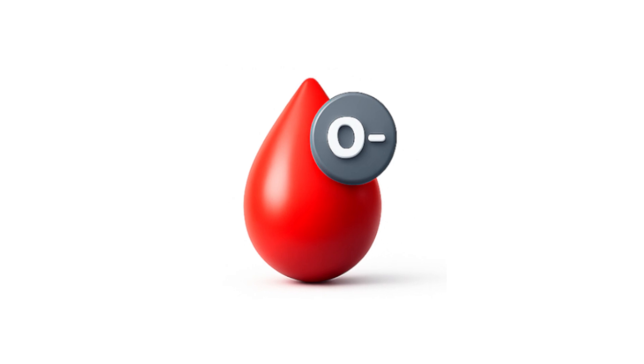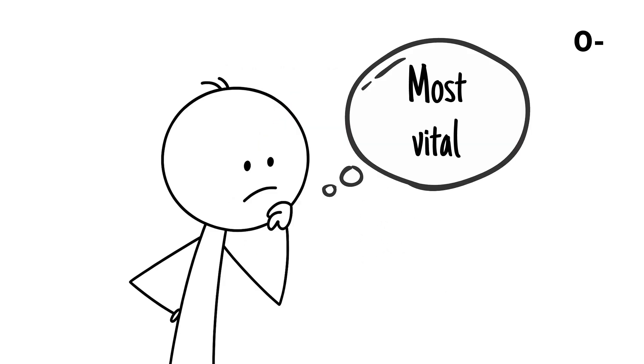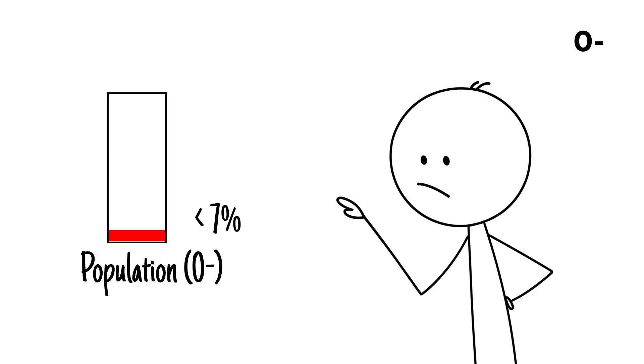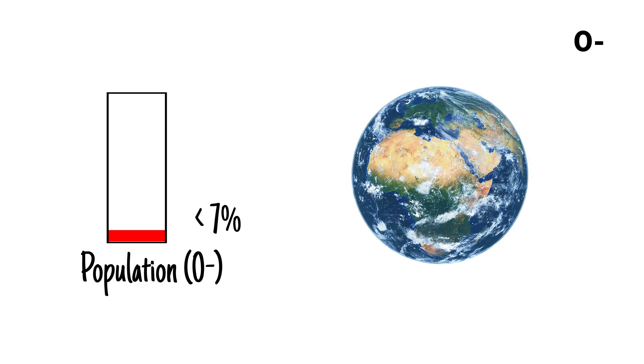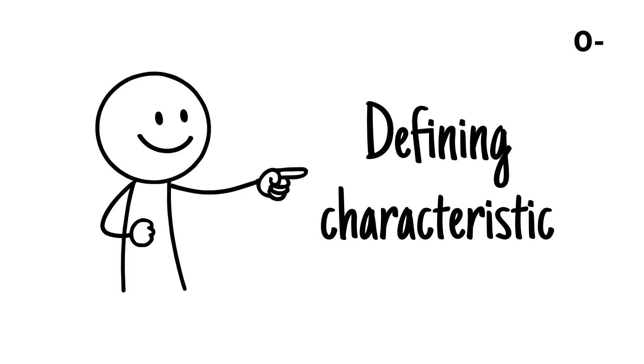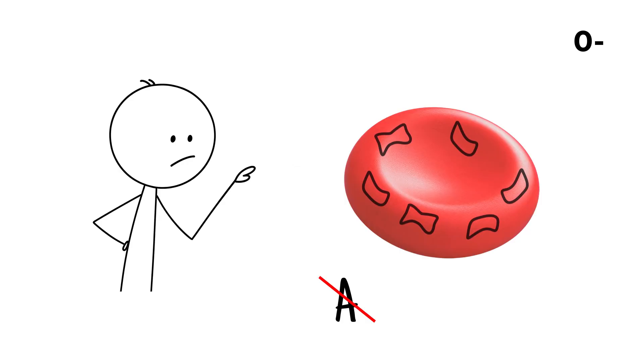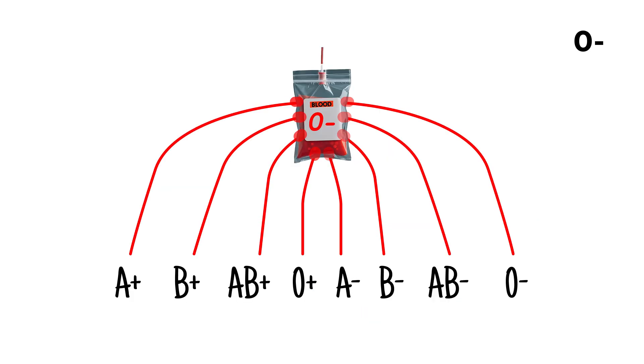O negative is one of the most vital and medically significant blood types, even though it's carried by less than 7% of the global population. Its defining characteristic is the complete absence of A, B and Rh D antigens on red blood cells. Because of this unique feature, O negative can be safely transfused into anyone.